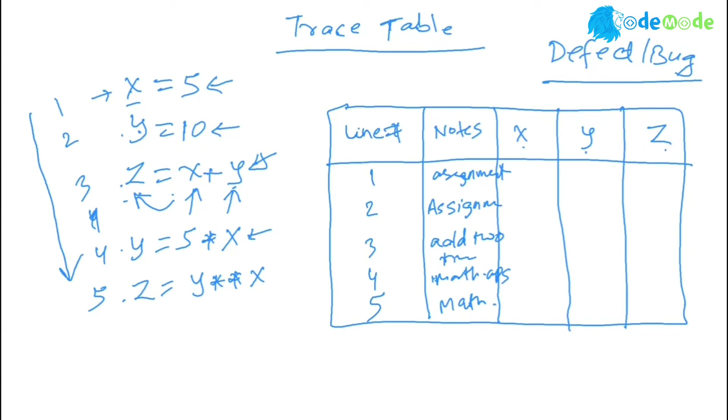Okay, so line number one, x equal to five, so x is five. There is no value for y, there is no value for z. Line number two, y equal to 10. So x still remains five, no change in that. Now y become 10, z is empty.